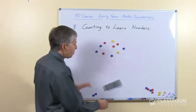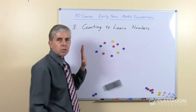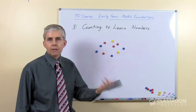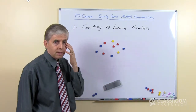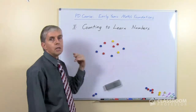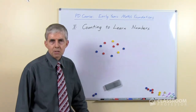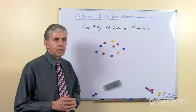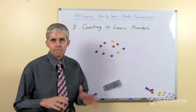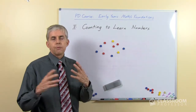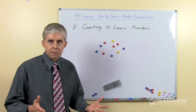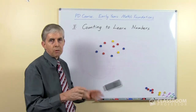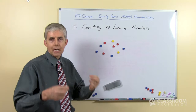I deliberately put up a fair number of objects. If I put a smaller number you could have seen how many there were without counting — and we're not dealing with that topic at this point, but I'll mention it. It's called subitizing: looking at a group of objects and knowing how many there are without counting.